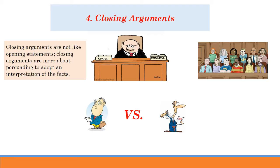Once the prosecution rests his case and the defense rests his case, then you go on to closing arguments. Closing arguments are not like opening statements — opening statements are very factual, very based on the facts of what happened. Closing arguments are more about persuading the jury to adopt a particular interpretation of the facts. Parties are free to use hypothetical analogies to make their points, to comment on the credibility of the witnesses, to discuss how the various pieces of evidence fit together in a compelling whole, and to advocate why jurors should decide the case in their favor. This part of the process involves argument, and they can use analogies, hyperbole, and emotional appeals as well.